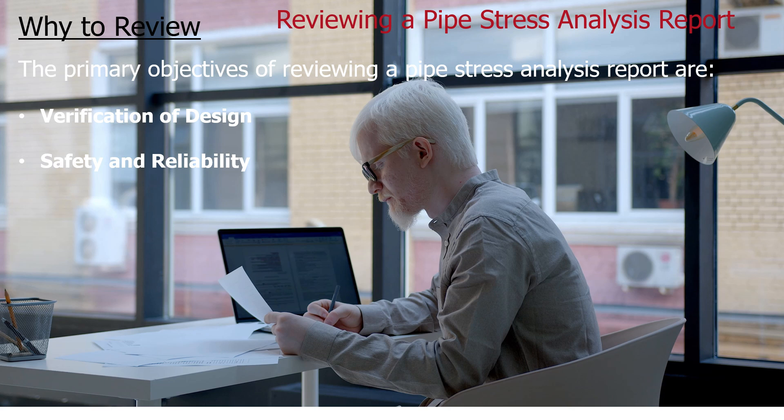The second objective is safety and reliability. Reviewing assesses the system's safety and reliability by examining how it responds to different loads including thermal expansion, pressure, external forces, and seismic events. This helps identify potential failure modes, weaknesses, or excessive stresses that could compromise the system's integrity. Next is operational performance — the stress report is evaluated to understand how the piping system will perform under various operating scenarios such as start-up, shutdown, transient conditions, and steady-state operation, ensuring the system can function as intended.